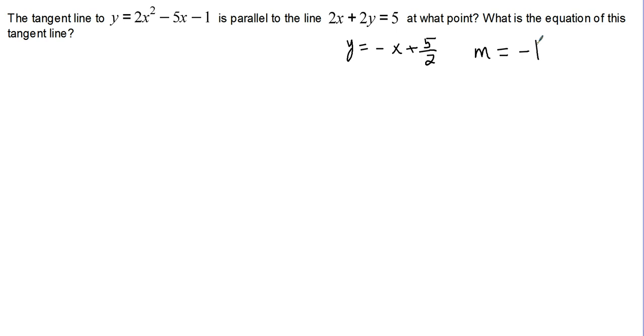If the tangent line is parallel to this equation, then it also has to have a slope of negative 1. The slope of a function is just its derivative, so dy dx, or the slope of the tangent line, should be equal to 4x minus 5, and that should equal negative 1.